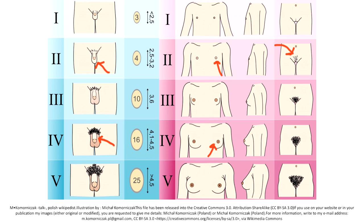In the final stage, stage 5, the pubic hair spreads to the medial thighs, the penis achieves an adult size in boys, and the breasts reach the adult size in girls.